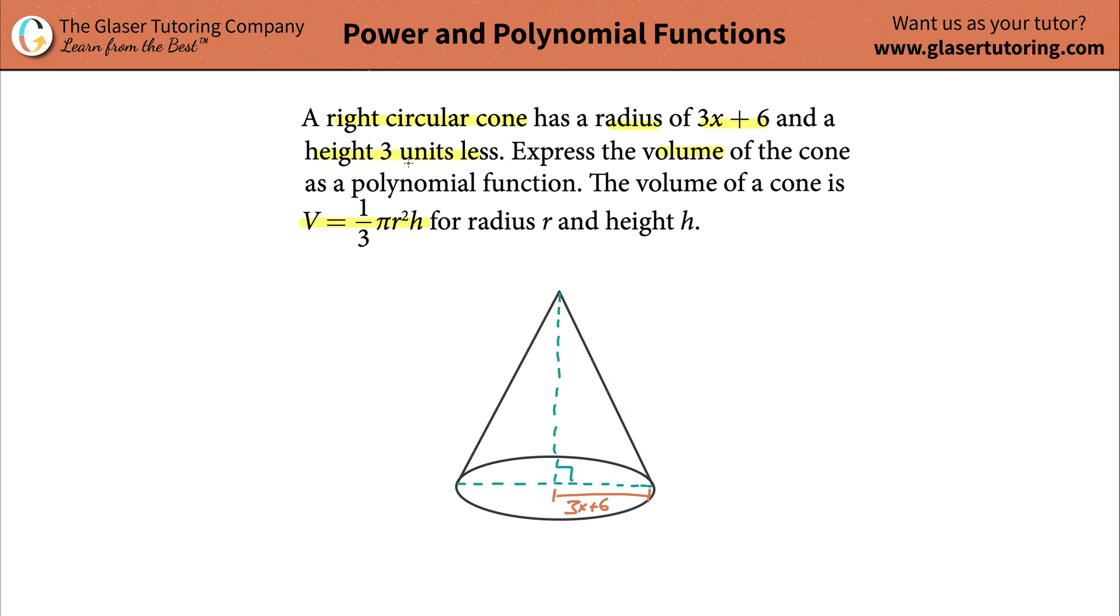Then it tells me something about the height. It tells me that the height of the cone is going to be 3 units less. Well, 3 units less than what? Well, than the radius. So, basically, this length right here, the height, is going to be 3x plus 6, the length of the radius, that is, minus 3. And the reason for that is because the height is 3 units less than the radius. So, it's the radius minus 3.